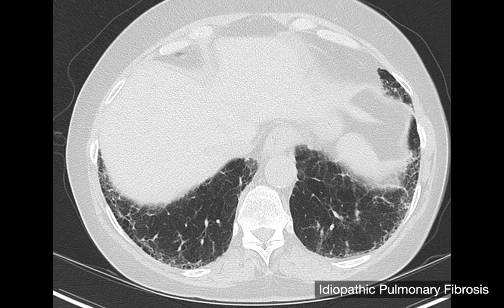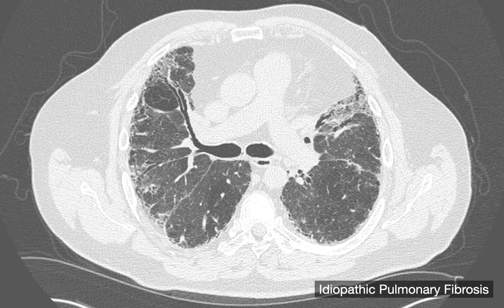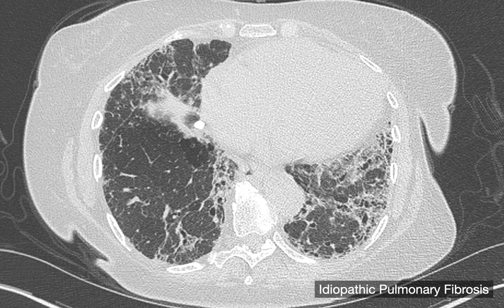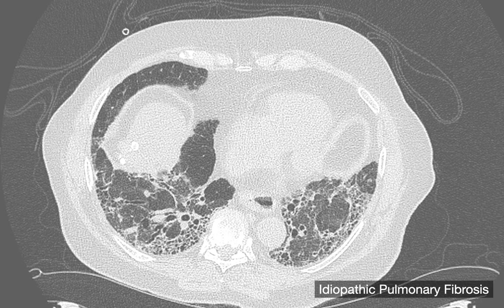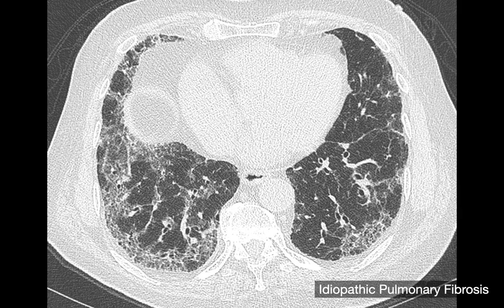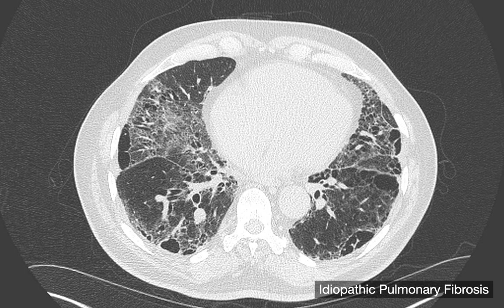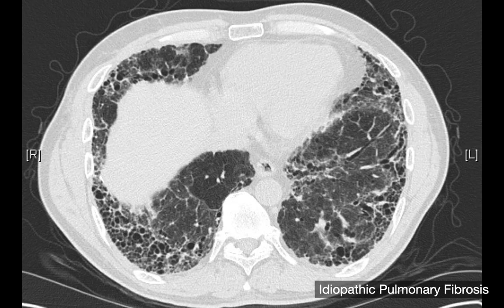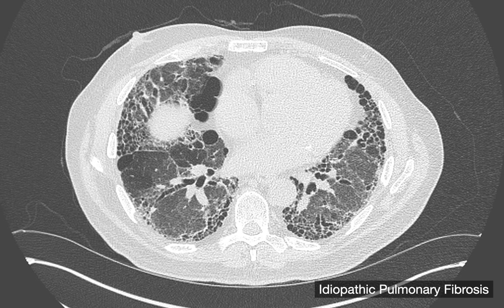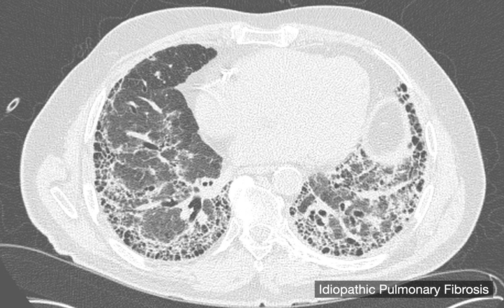Imaging examples of IPF show this webby, reticular interstitial opacity appearance primarily in the peripheral lungs at varying severity. Black holes may appear — these may not always represent honeycombing; they could also be dilated airways in traction bronchiectasis viewed in cross section. You might also perceive a little ground glass associated with these interstitial opacities, which happens when elements of interstitial fibrosis are below the spatial resolution of CT image pixels. Once you start seeing many holes clustered together, you're more likely dealing with true honeycombing rather than traction bronchiectasis.